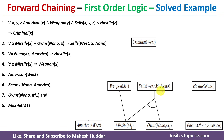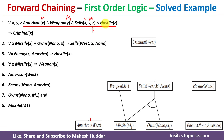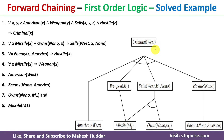Now looking at all seven facts, the original fact American West combined with the three newly generated facts — weapon M1, West sold M1 to Nono, and Nono is hostile — satisfies the premises of the first rule. American X: X is replaced with West. Weapon Y: Y is replaced with M1. West sold M1 to Nono: Z is replaced with Nono. Since all premises of the rule are true, the conclusion is also true. The conclusion side has Criminal X, and X is replaced with West — so we prove that West is a criminal.